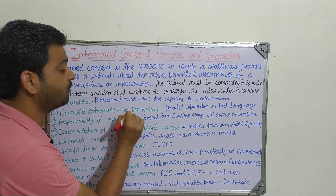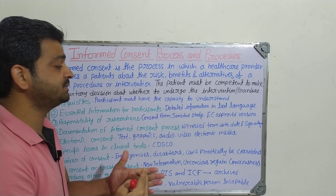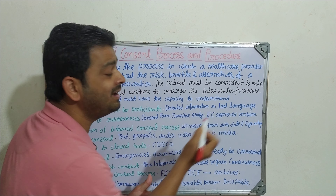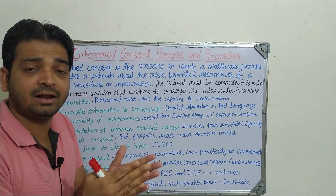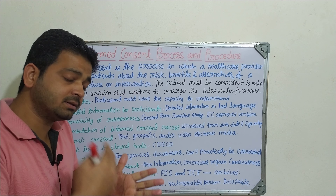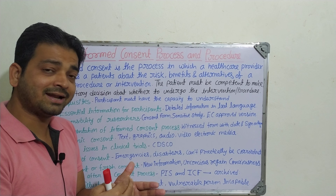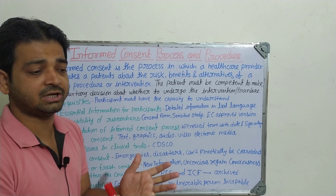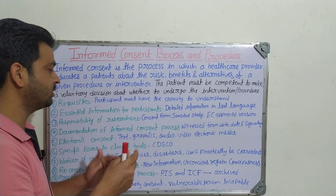The second one is essential information for participants. What are the mandatory information that participants should know? Detailed information in local language — suppose they understand Telugu, Hindi, Bengali, Gujarati, Marathi, or Tamil, whatever language they understand, wherever the clinical trial is going to be conducted, they should understand it in their local language. It should not always be in English or any other language which they don't understand. So that is very important.